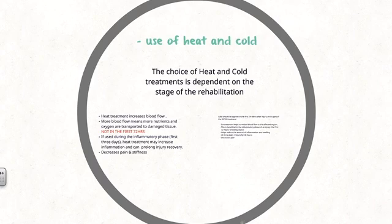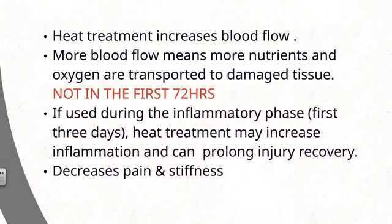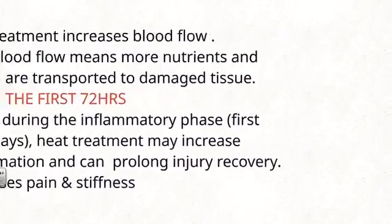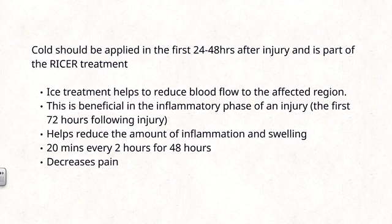The last dash point is the use of heat and cold. The choice of treatment is dependent on the stage of rehabilitation. Heat treatment increases blood flow, meaning more nutrients and oxygen are transported to damaged tissue — but not in the first 72 hours, known as the inflammatory phase. If used in those first three days, heat may increase inflammation and prolong recovery. Heat does help decrease pain and stiffness in later stages. Cold should be applied in the first 48 hours as part of RICER — rest, ice, compression, elevation, and referral. Ice reduces blood flow and inflammation and swelling during the inflammatory phase. The recommendation is to ice for 20 minutes every 2 hours for the first 48 hours, and it also decreases pain.